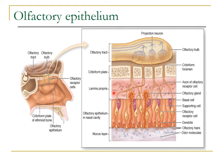In the lamina propria there are olfactory glands called Bowman's glands, which open onto the surface of the epithelium into the nasal cavity. These olfactory glands secrete mucus and spread it over the epithelial layer so that odor molecules can dissolve in this mucus, enabling the olfactory hair cells to sense and receive the stimuli of olfaction.